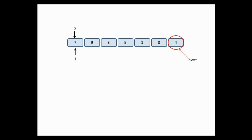I will iterate through the list from element 1 to the element before the pivot, i.e., index N minus 1. At the start, both I and P are pointing to the first element, which is 7. We compare the value at index I with the pivot: if the value at I is smaller than the pivot, we swap the elements at I and P; otherwise, we just move I forward.